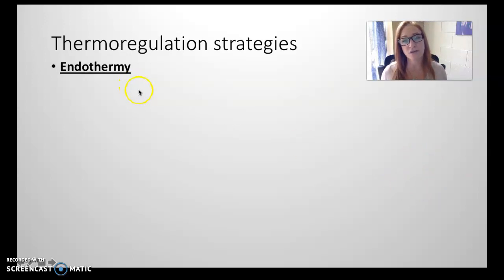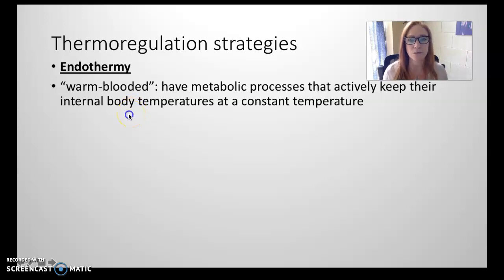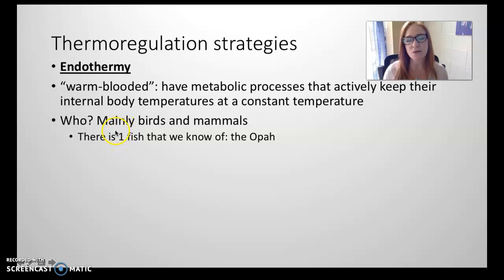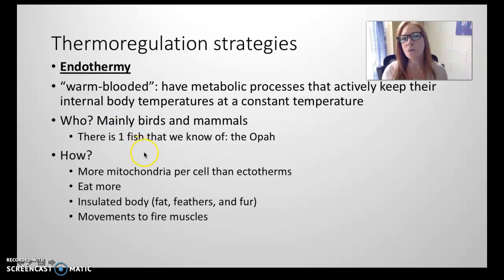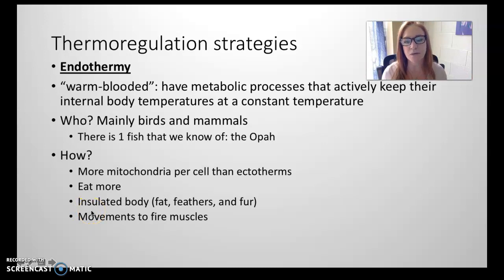The third thermoregulation strategy is endothermy. These are the warm-blooded birds and mammals — and some dinosaurs were also, we're pretty sure, endothermic. These have internal metabolic processes that actively keep their internal body temperature warm. There's one fish called the opah that is truly endothermic. Endothermy is accomplished by having more mitochondria in our cells than ectotherms, constantly releasing more ATP. We also eat a lot more — mammals eat a lot more than reptiles and fish.